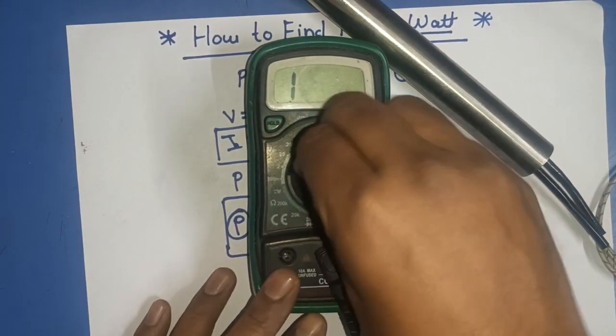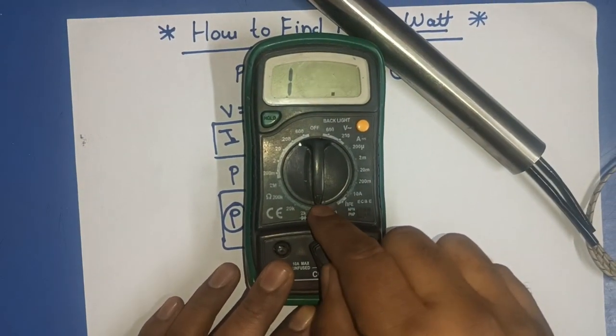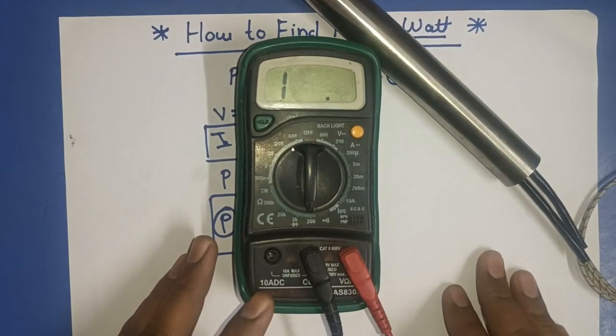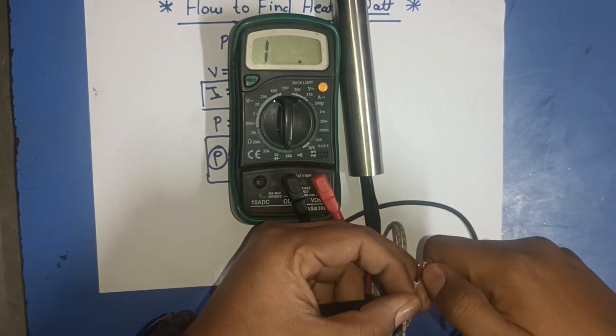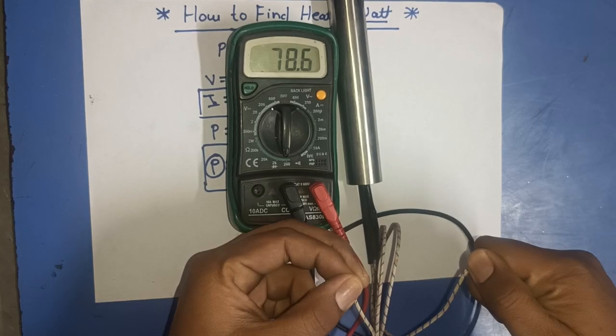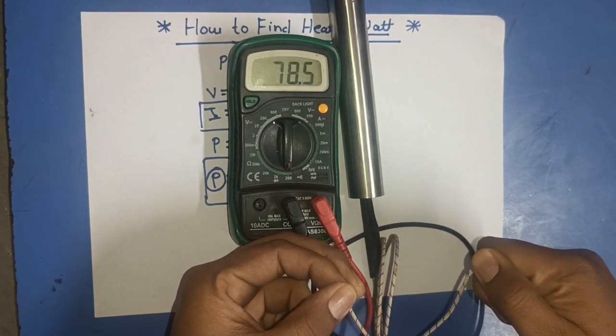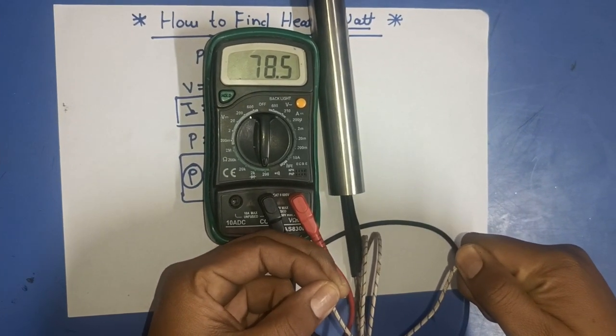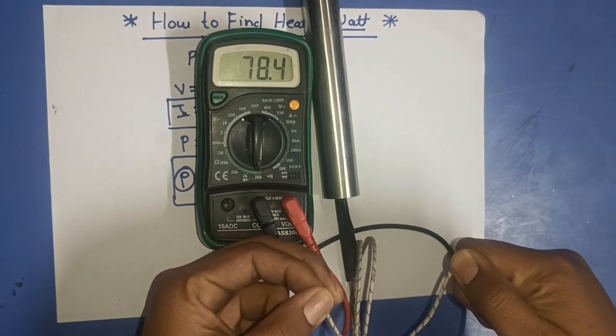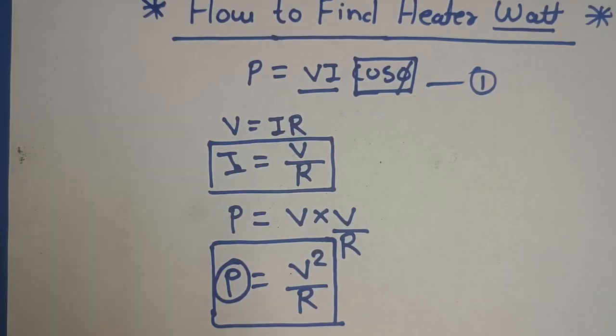For resistance, we set multimeter on resistance range and measure resistance of heater. First we measuring resistance. Resistance is 78 ohm. Approximately 78 ohm. We note down this resistance value.